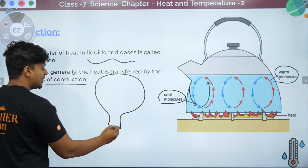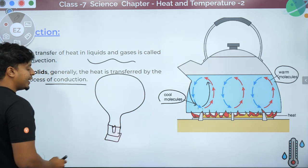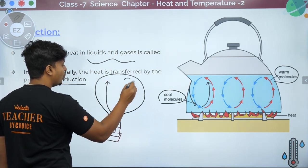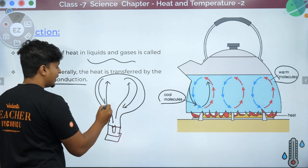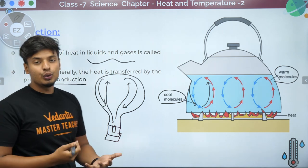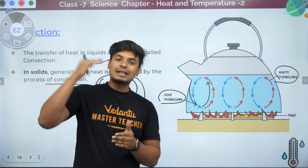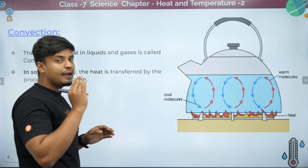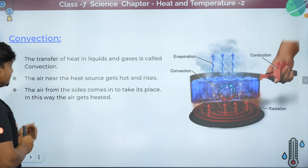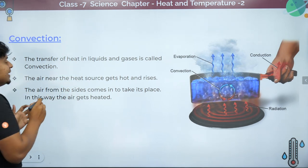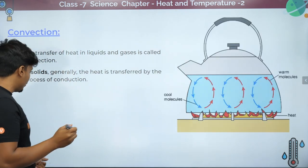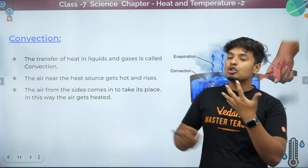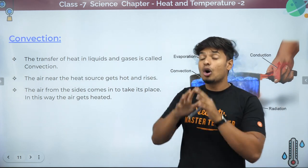The same thing happens in air. Take a hot air balloon — people burn fire inside it. The hot air rises up and the cold air comes down. Heat is transferred because of the movement of air molecules, since warm air rises up. So in both liquids and gases, heat transfer happens through convection. The air near the heat source gets hot and rises, and air from the sides comes to take its place.